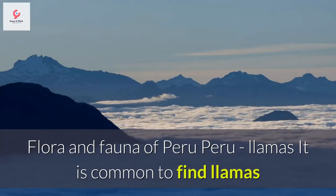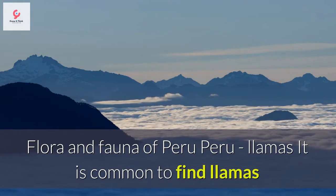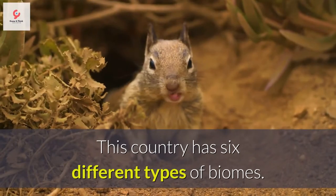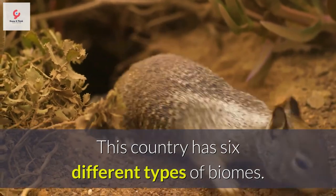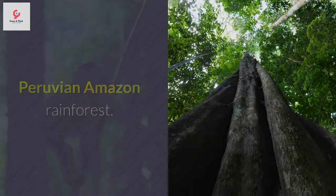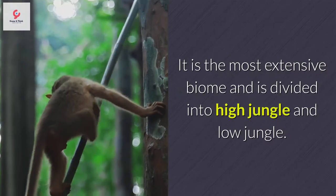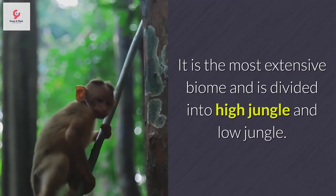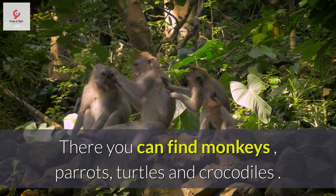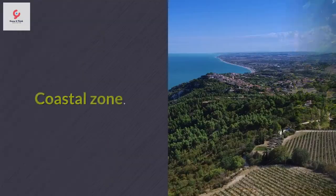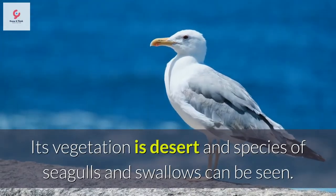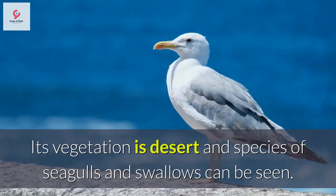It is common to find llamas and guanacos in the Peruvian mountains. This country has six different types of biomes. The Peruvian Amazon Rainforest is the most extensive biome and is divided into high jungle and low jungle, where you can find monkeys, parrots, turtles, and crocodiles. In the coastal zone, its vegetation is desert and species of seagulls and swallows can be seen.